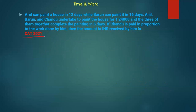This is the second question from CAT 2021. Anil can paint a house in 12 days. Varun can paint it in 16 days. Anil, Varun, and Charu undertake to paint the house for 24,000. The three of them together complete the painting in 6 days. If Charu is paid in proportion to the work done, then what is the amount received by him?